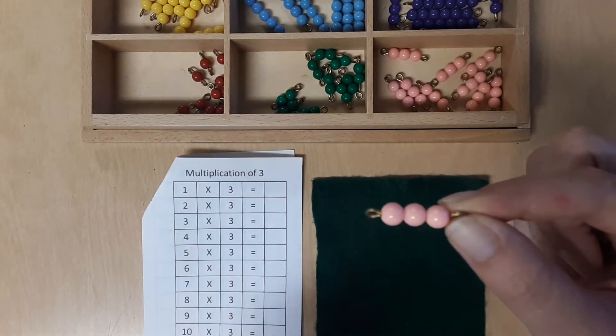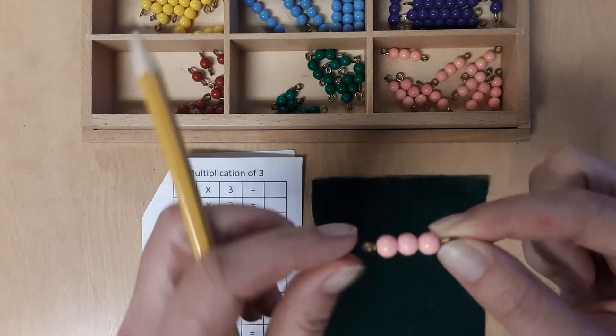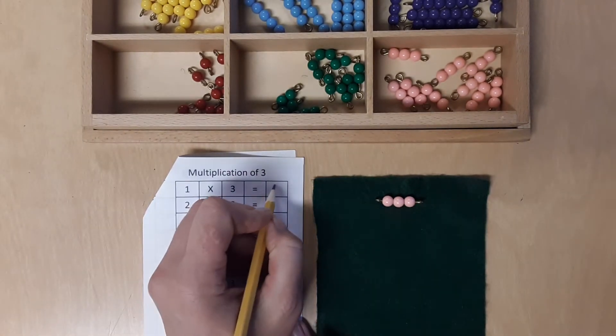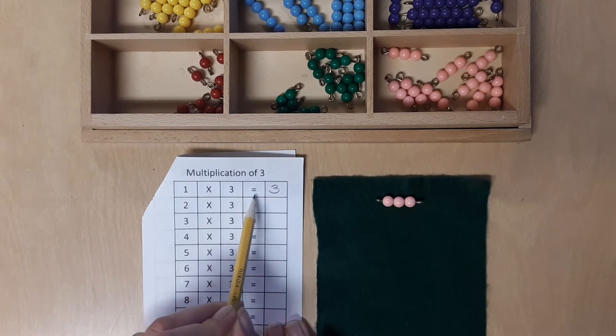We'll take one of those and count it. Ready? We'll count the beads. 1, 2, 3. Set that down. 1 times 3 equals 3.